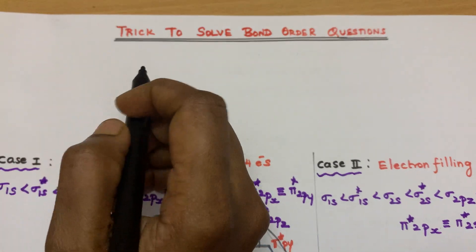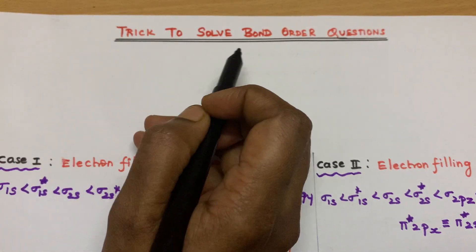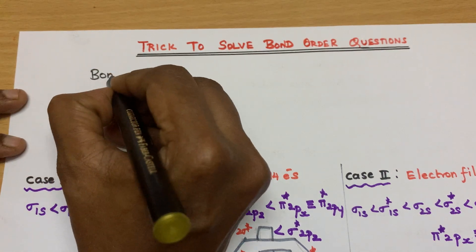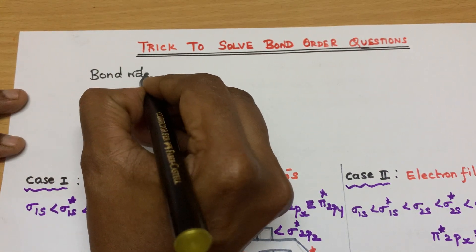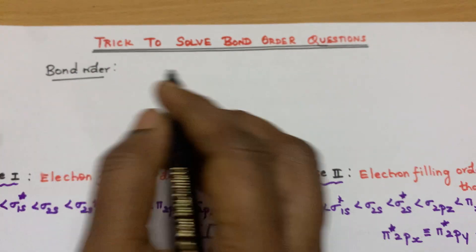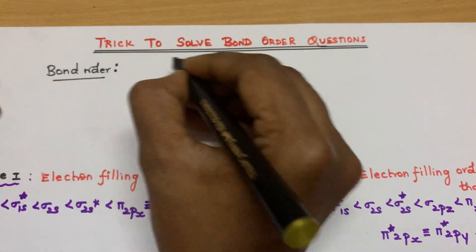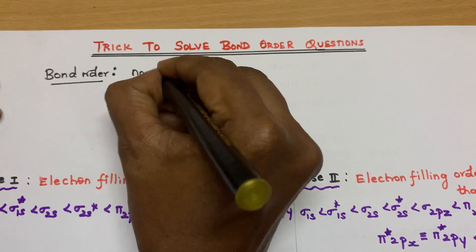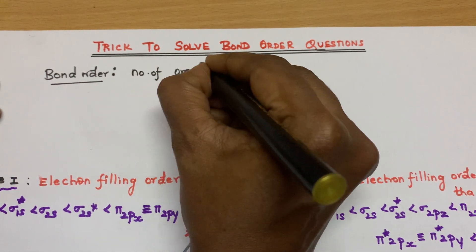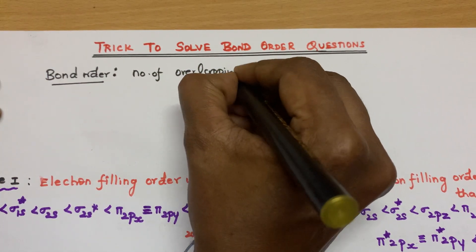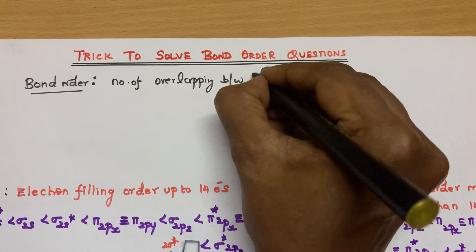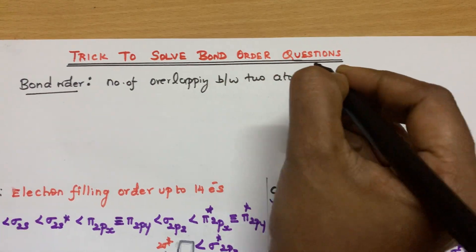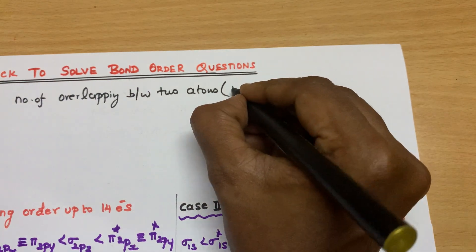Students, today we are going to see a trick to solve bond order questions. First of all, what is bond order? It is nothing but the number of overlaps between two atoms — the number of overlapping between two atoms. In simple words, it is the number of bonds.